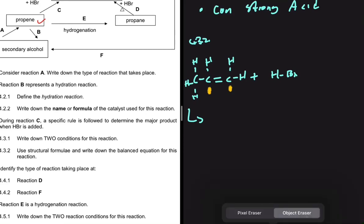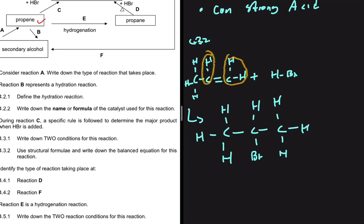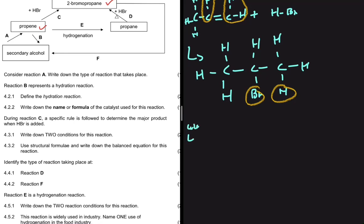The first carbon has two hydrogens and the middle carbon has one hydrogen, so the hydrogen tends to go to the carbon with more hydrogens already. That means Br goes to the middle carbon — where there are fewest hydrogens. So our major product has Br on the middle carbon and H on the first carbon. Br on the first carbon and H on the second is the minor product.